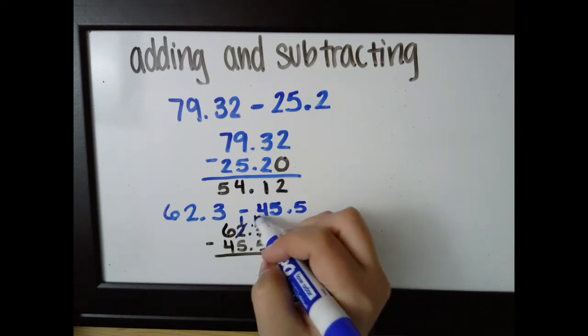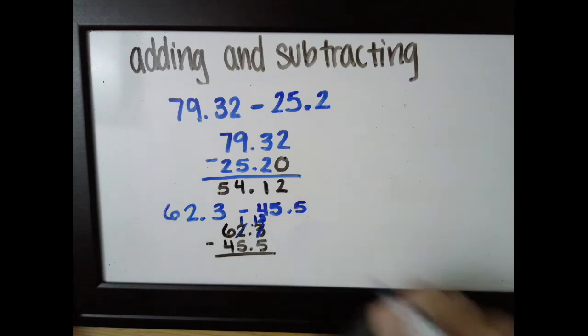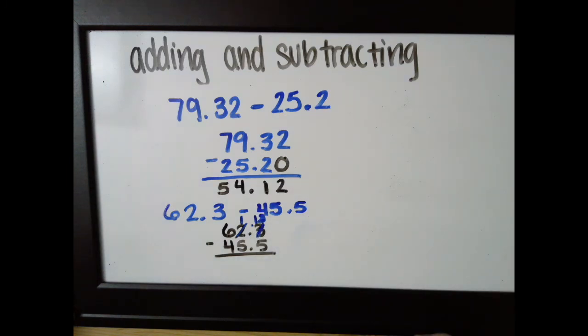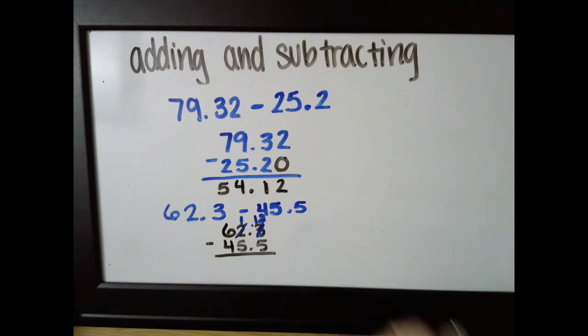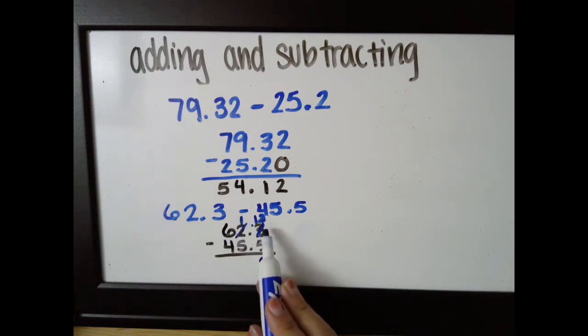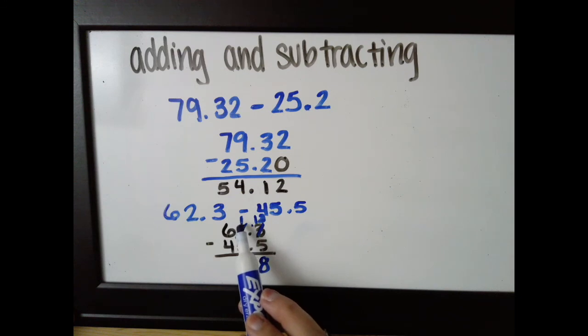Since I've moved that whole, that's ten tenths I've brought over there. So this is now thirteen tenths that I have because I take the ten tenths from the one that came over and the three tenths that were already there, and I now have thirteen tenths. I can do thirteen minus five. That's eight.